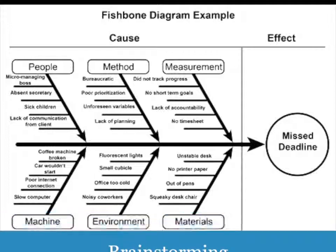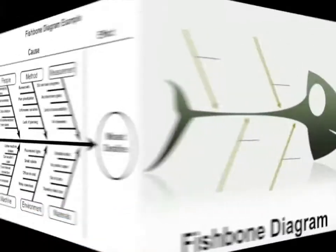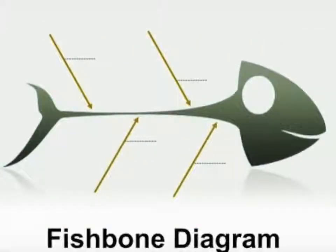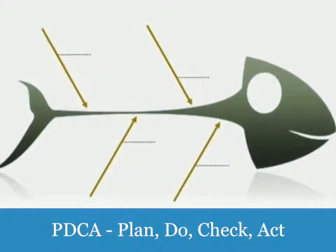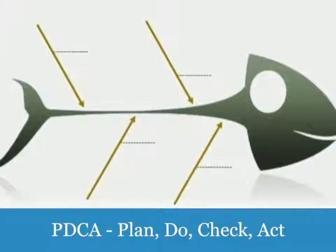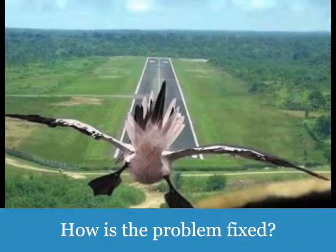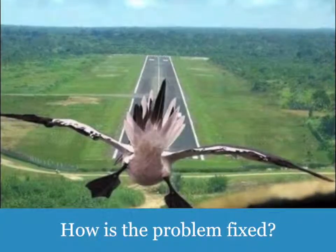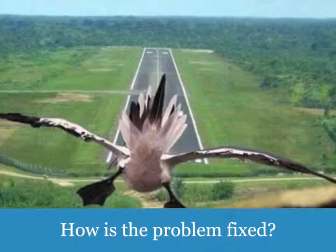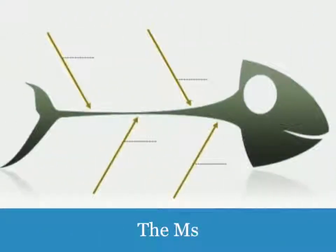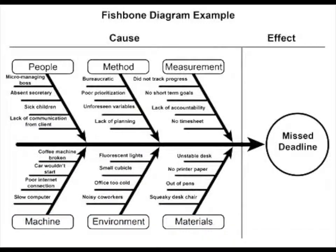First is brainstorming. The second is prioritizing, where you put all the brainstorming ideas into some type of order, and the development of the action plan, where you take all of the elements and put it together in the Do part of PDCA. The fishbone chart is very good at trying to get down to exactly how to fix a problem because you consider all the elements — things like the M's: material, machine, man, measurement, and method/environment as well.